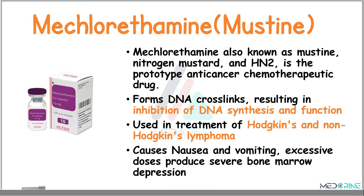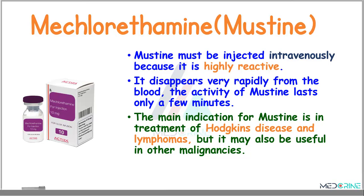Let's start with mechlorethamine or mustine. Mechlorethamine is known as mustine or nitrogen mustard and is a prototype anticancer chemotherapeutic drug. It works by forming DNA crosslinks resulting in inhibition of DNA synthesis and function. We use mechlorethamine in the treatment of Hodgkin's and non-Hodgkin's lymphoma. Important side effects include nausea, vomiting, and bone marrow depression in excessive doses. Mechlorethamine must be injected intravenously because of its highly reactive properties, and its activity lasts only a few minutes in the blood.